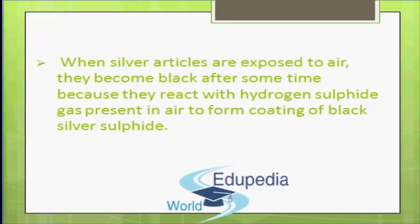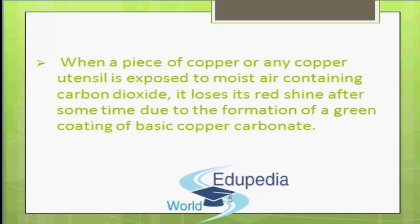This substance is called rust. Rust is hydrated iron oxide. The second example: when silver articles are exposed to air, they become black after some time because they react with hydrogen sulfide gas present in air to form a coating of black silver sulfide. The third example: when a piece of copper or any copper utensil